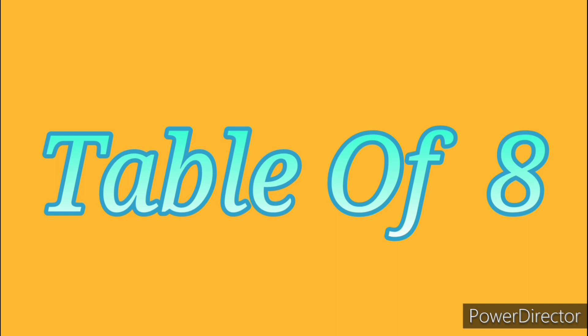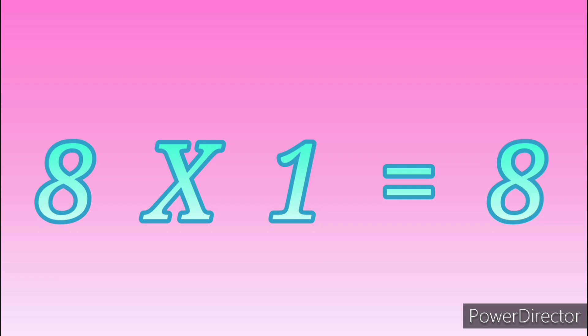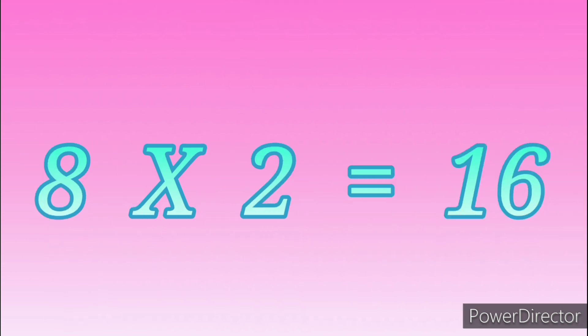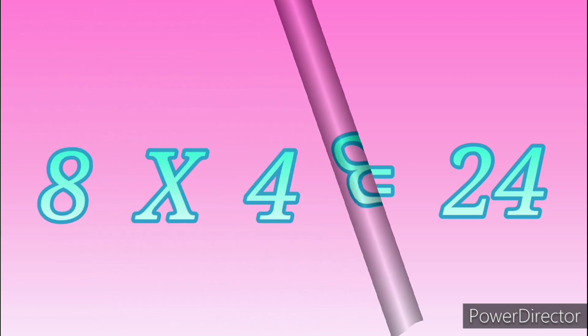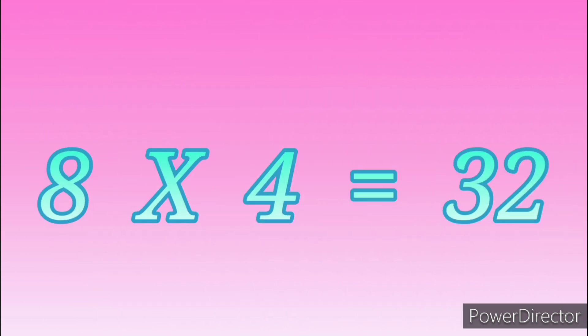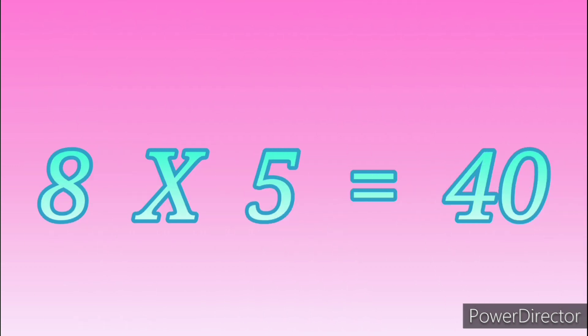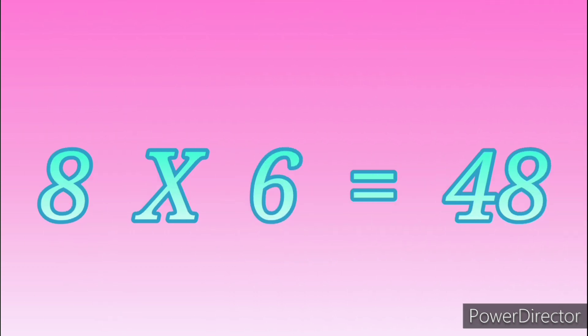Table of Eight. Eight ones are eight. Eight ones are eight. Eight twos are sixteen. Eight twos are sixteen. Eight threes are twenty-four. Eight threes are twenty-four. Eight fours are thirty-two. Eight fours are thirty-two. Eight fives are forty. Eight fives are forty. Eight sixes are forty-eight. Eight sixes are forty-eight.